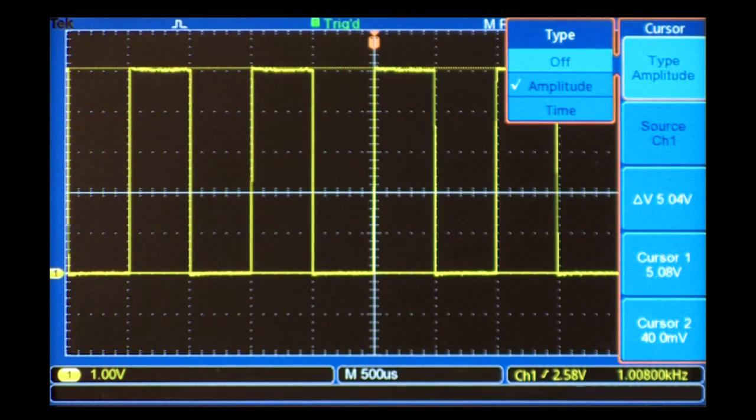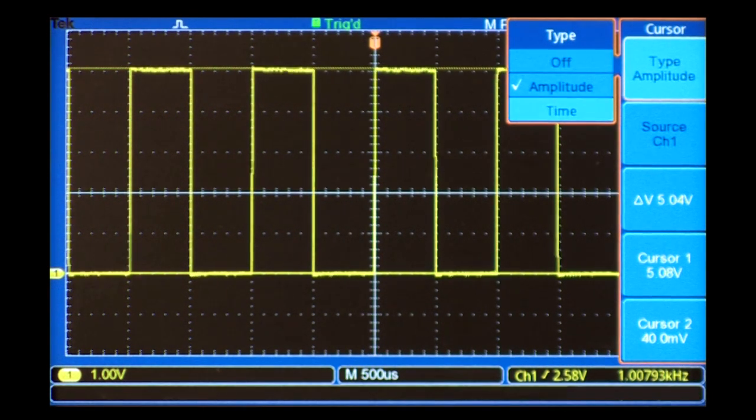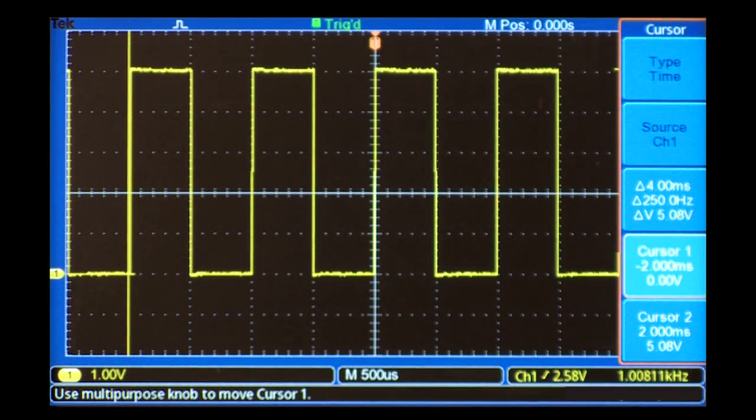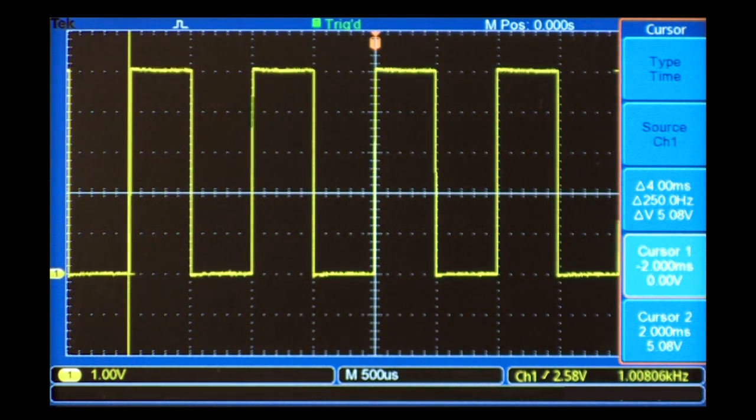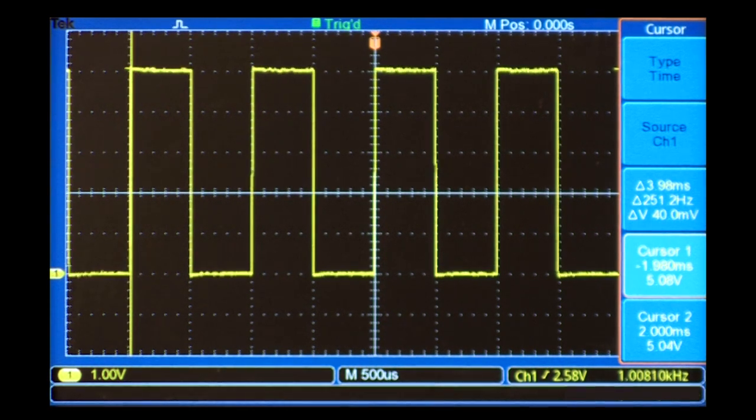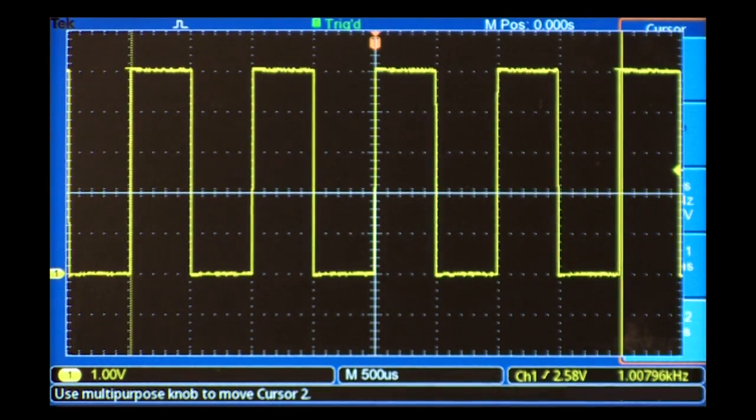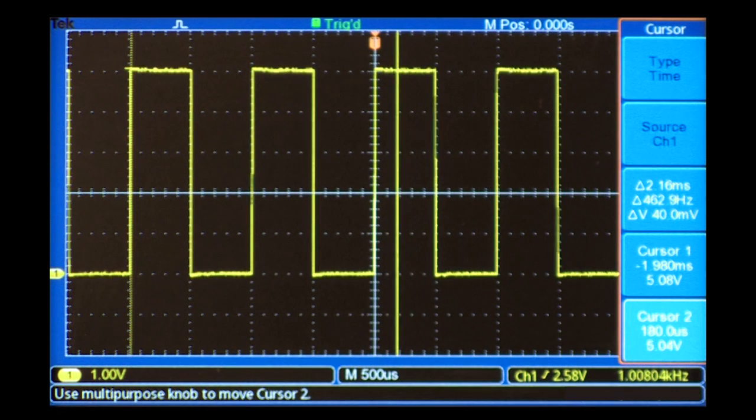The process for taking time measurements is similar. When I switch to time mode, the cursors switch to a vertical orientation. I'll position the first cursor on the first rising edge of the signal. Next, I'll position the second cursor on the second rising edge to encompass one period of the signal.